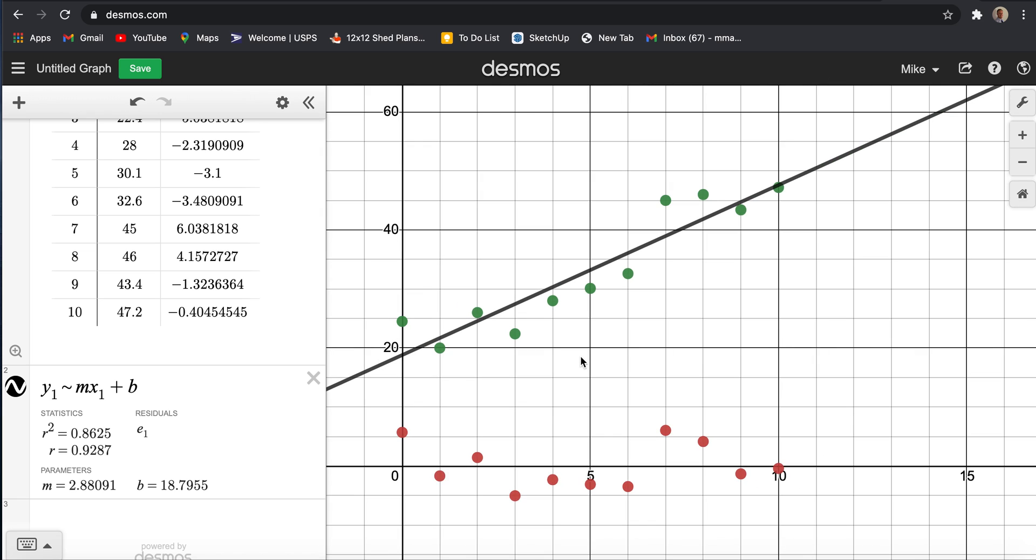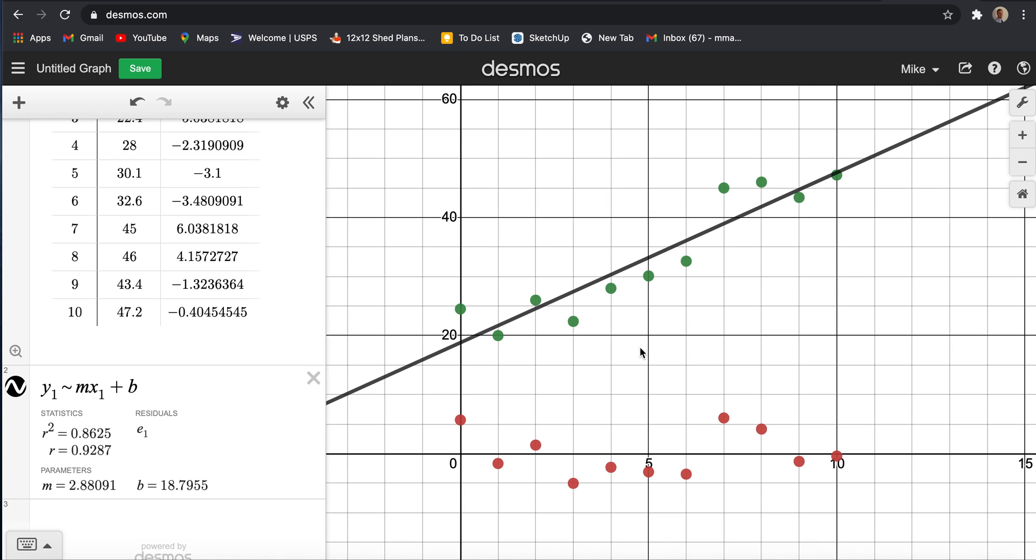The final thing I want to discuss, and this is all kind of recap for those of you that have experienced lines of best fit before. There's two other fancy words, interpolation and extrapolation. If you want to make a prediction, let's say at this point right here, we have no data at that point. But because it occurs within our collected range of data, we would call this an interpolation.